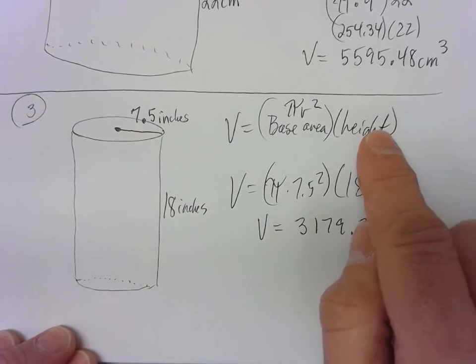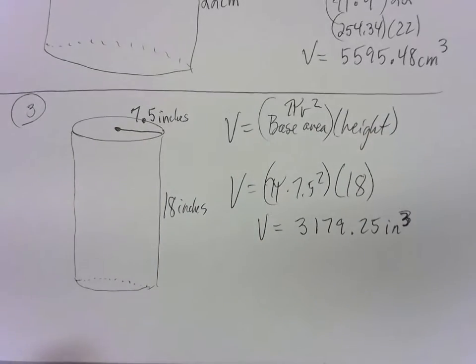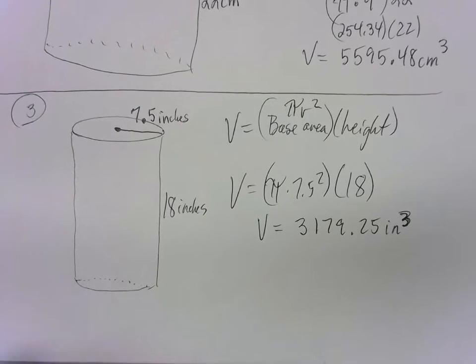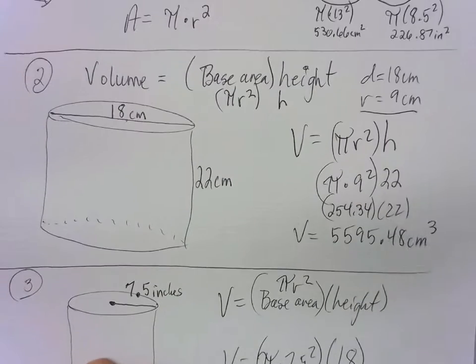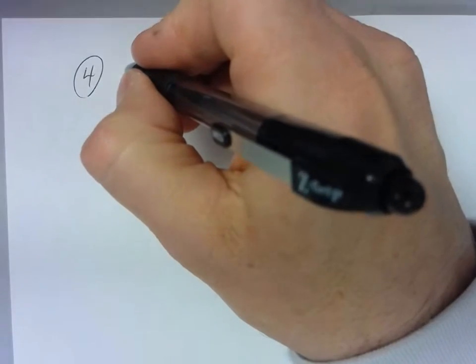So: get the area of your base using pi times radius squared (since it's a circle), then multiply by the height to get the volume — that tells you how much it holds, how much it takes to fill it, its capacity. Now our last topic for this lesson: what do you do when they give you the volume and you have to work in reverse to find the height?